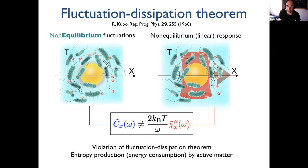However, when you are in a bacterial bath — so the original system is not an equilibrium system — when you perturb it weakly, the response is not related to the fluctuations in the way given by the fluctuation-dissipation relation. This is broken.